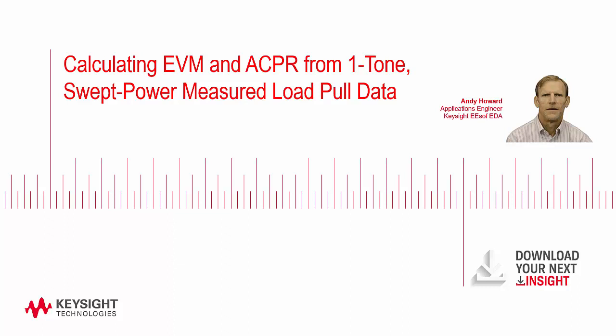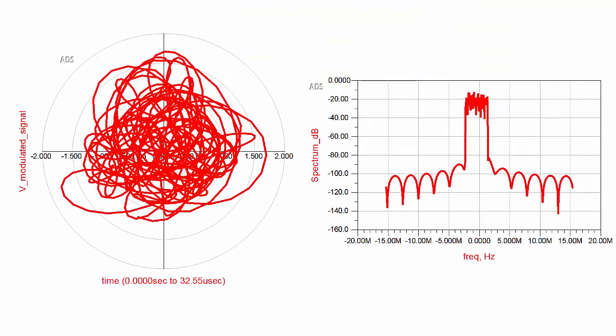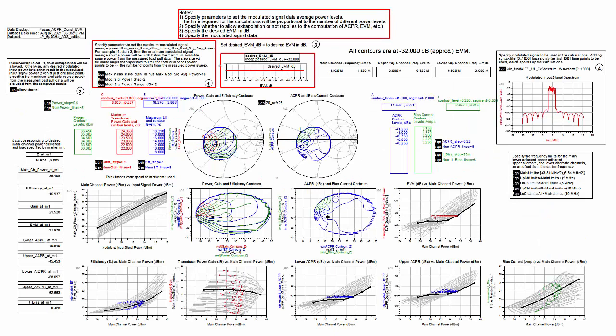I'm Andy Howard, an applications engineer with Keysight ESOF EDA. In this brief video, I will demonstrate an ADS workspace that shows how to plot one-tone swept power measured load pull data and use it with a modulated signal to calculate error vector magnitude, adjacent channel power ratio, and other data.